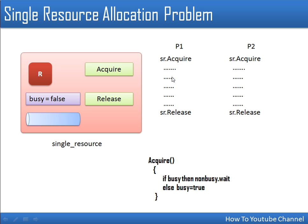Let's see this scenario with the monitor. Say P1 and P2 both need to do some work, but before that they will call the acquire procedure, and once their work is done they will call the release procedure. If P1 and P2 both try to call the acquire function simultaneously, let's trace what happens.